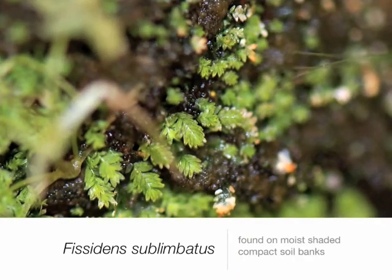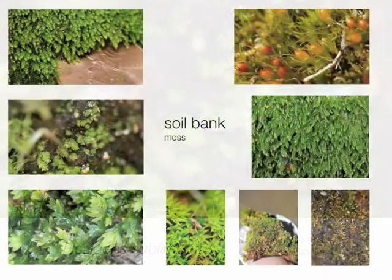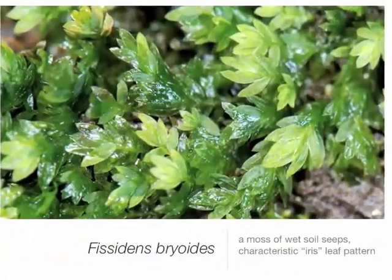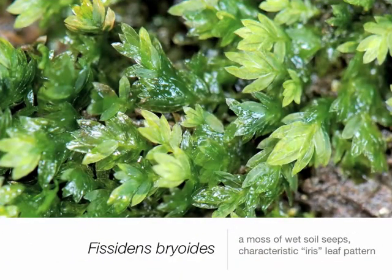Our next soil bank moss is Fissidens sublimbatus, which grows in moist shaded soil and in crevices on a slope. That is opposed to our other species of Fissidens — Fissidens viridulis — which grows on wet soil slopes often in contact with running water and has that characteristic iris-leaf pattern.